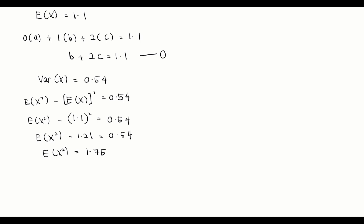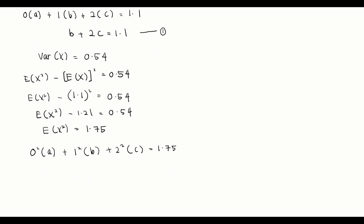To find E(X²), we calculate: 0 squared times a, plus 1 squared times b, plus 2 squared times c, equals 1.75. This simplifies to b plus 4c equals 1.75. So now we have two equations to solve simultaneously.